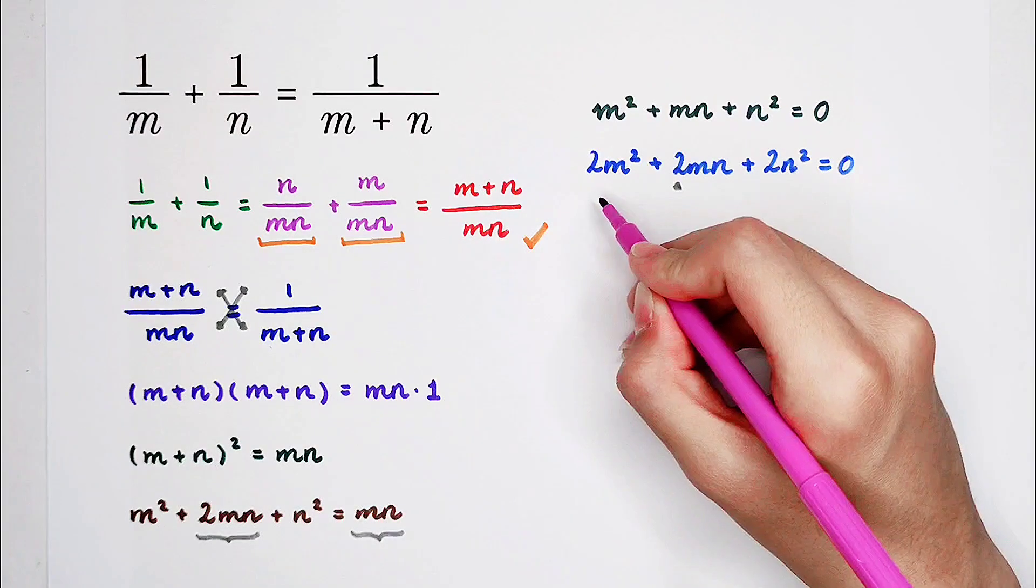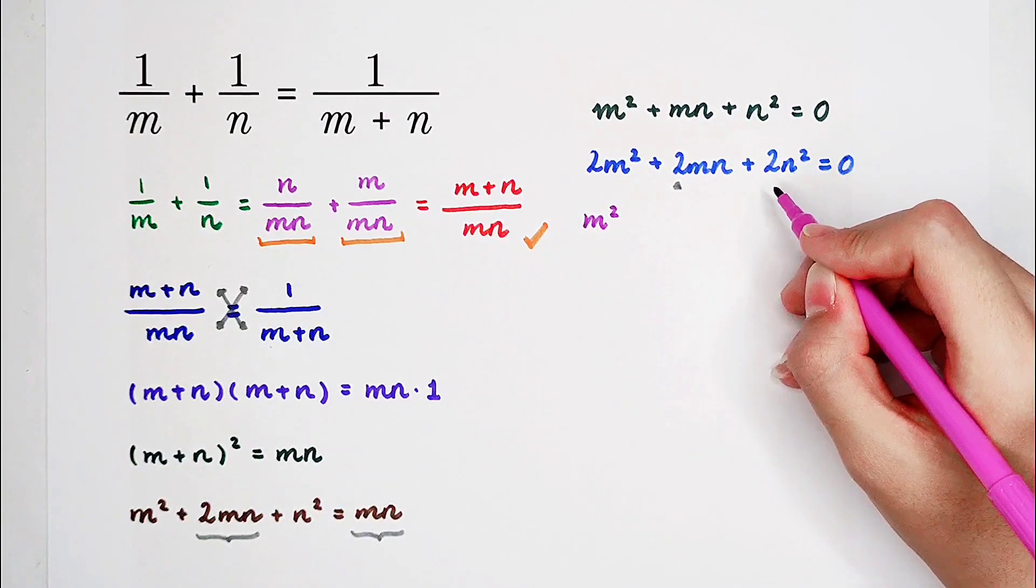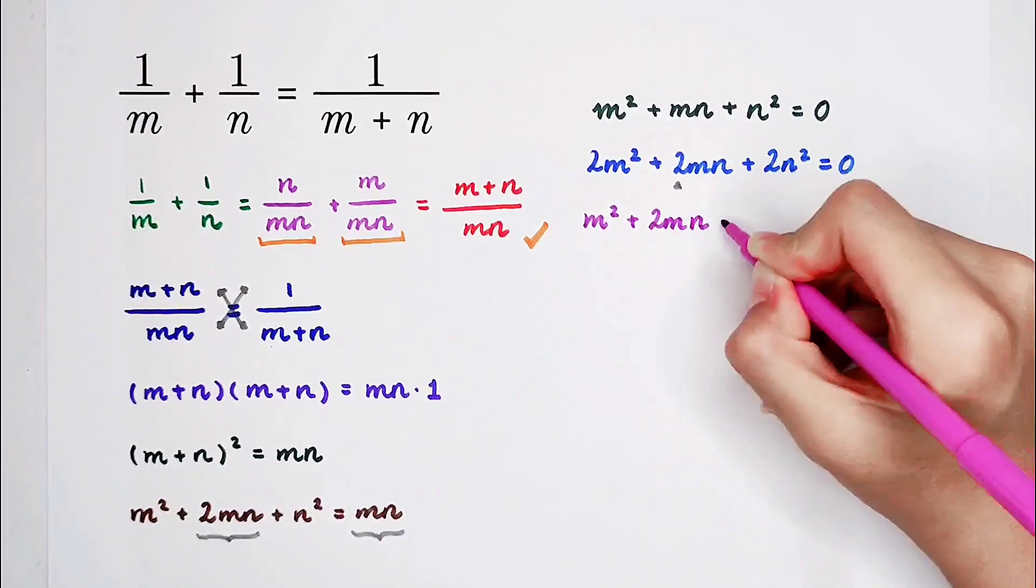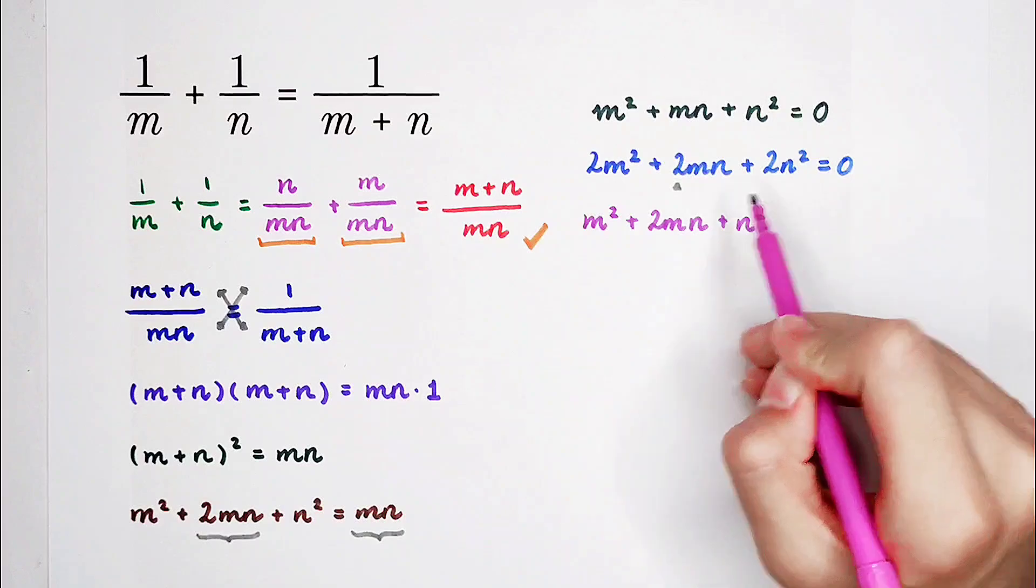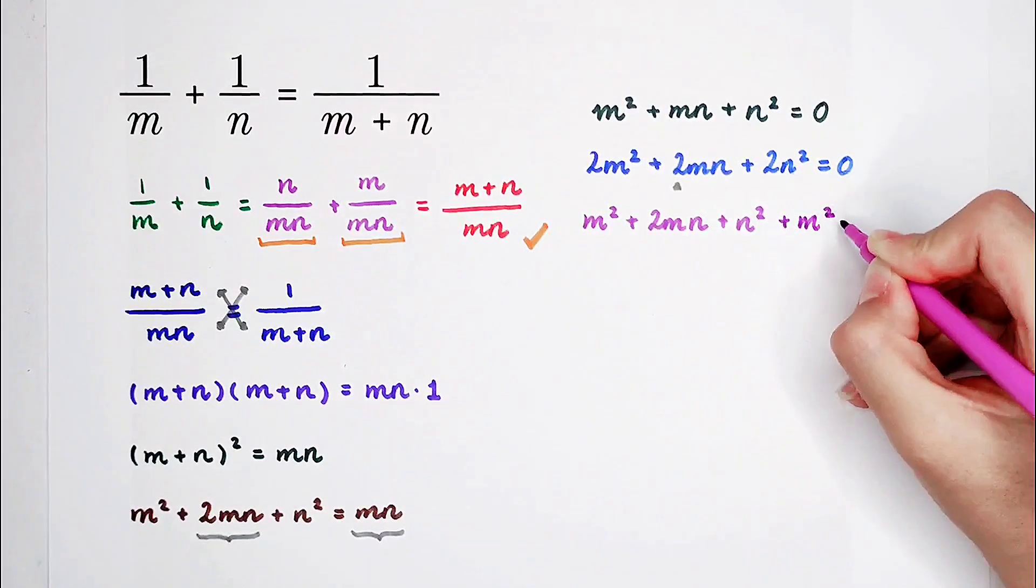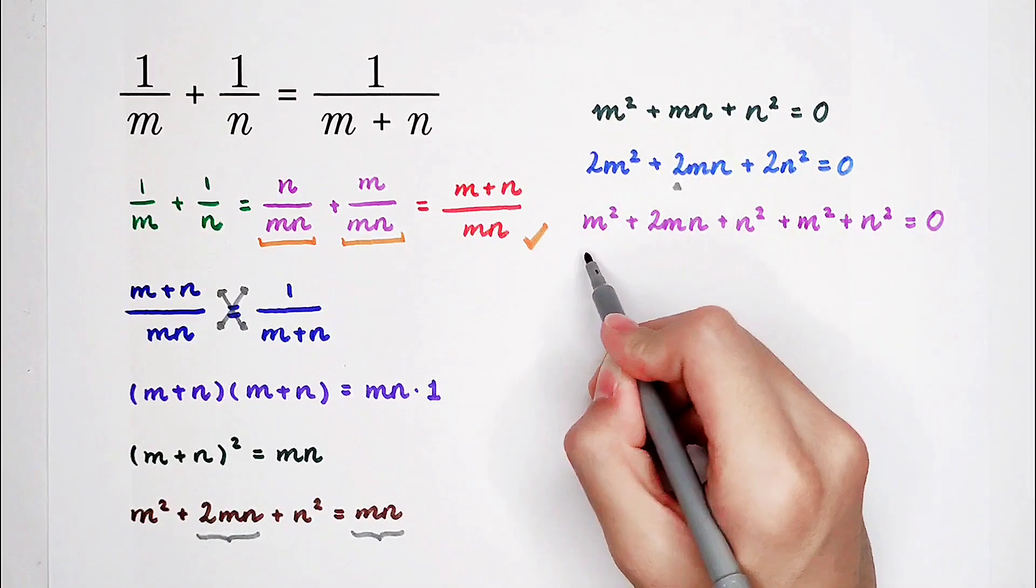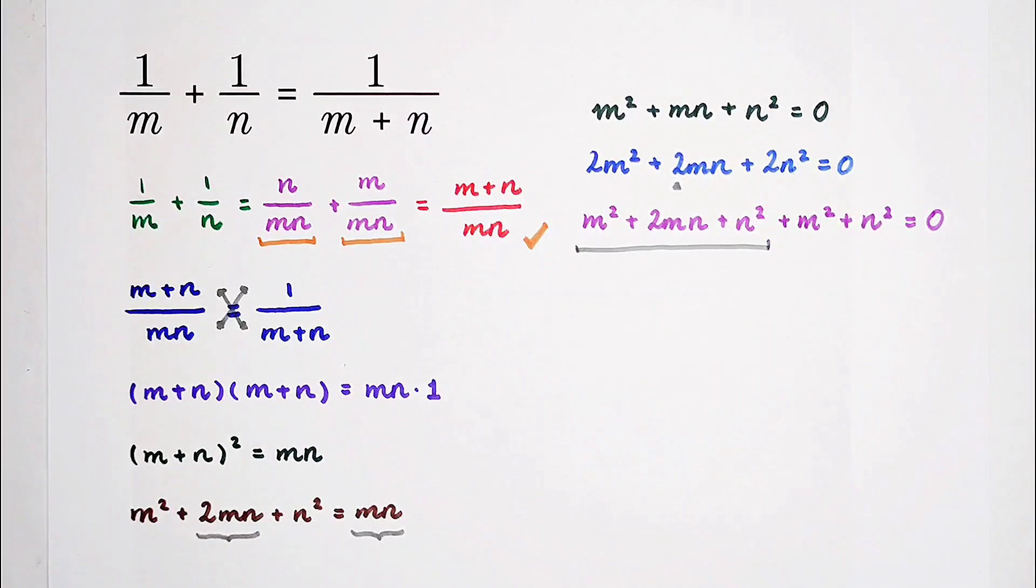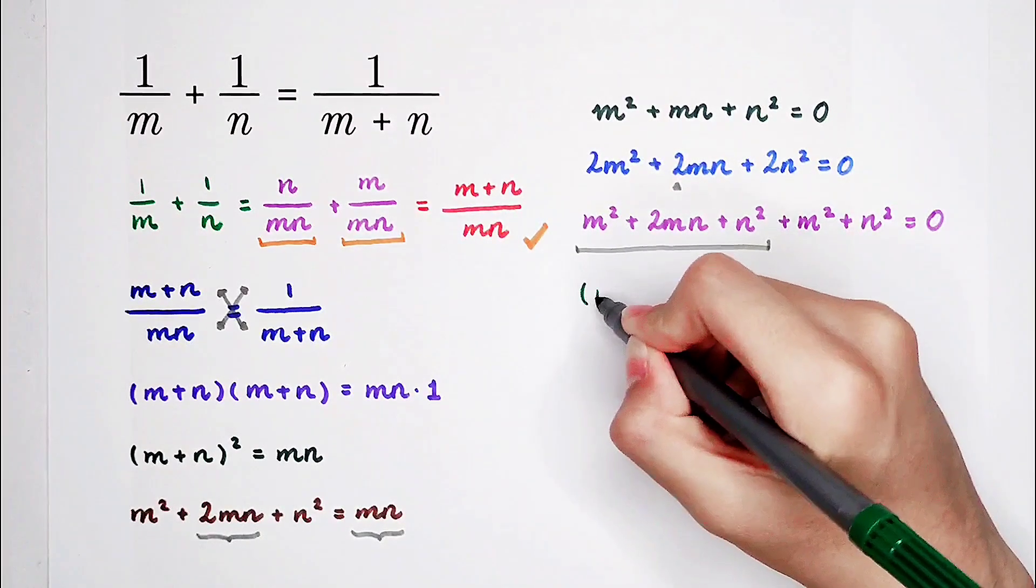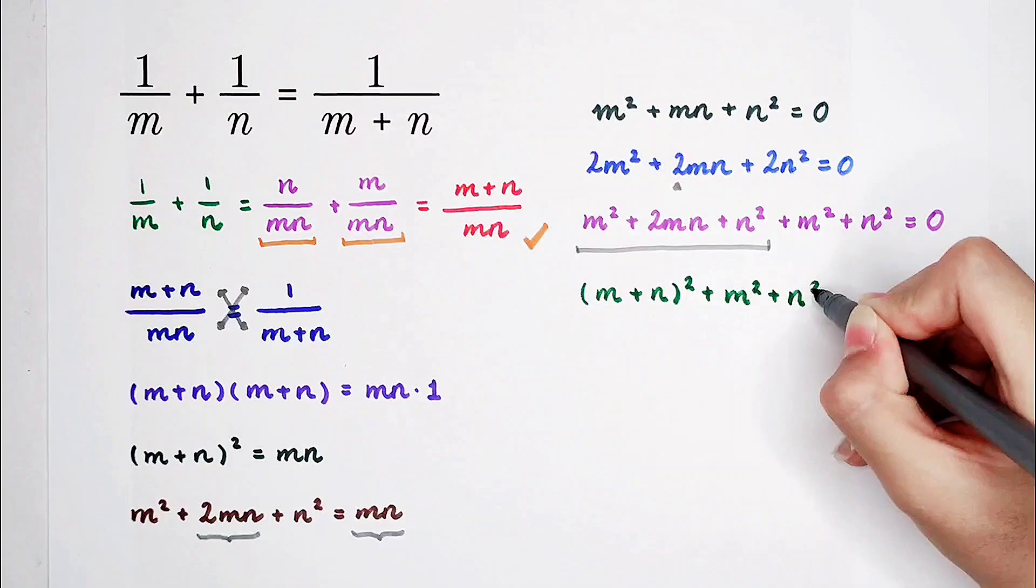2 times m squared can be written as m squared plus m squared. 2 times n squared is n squared plus n squared. So now we can write it as the new left-hand side: m squared plus 2mn plus n squared. We lack an m squared, so add it here. n squared as well. This section, m squared plus 2 times mn plus n squared, is m plus n all squared, and then plus m squared and then plus n squared. It's equal to 0.